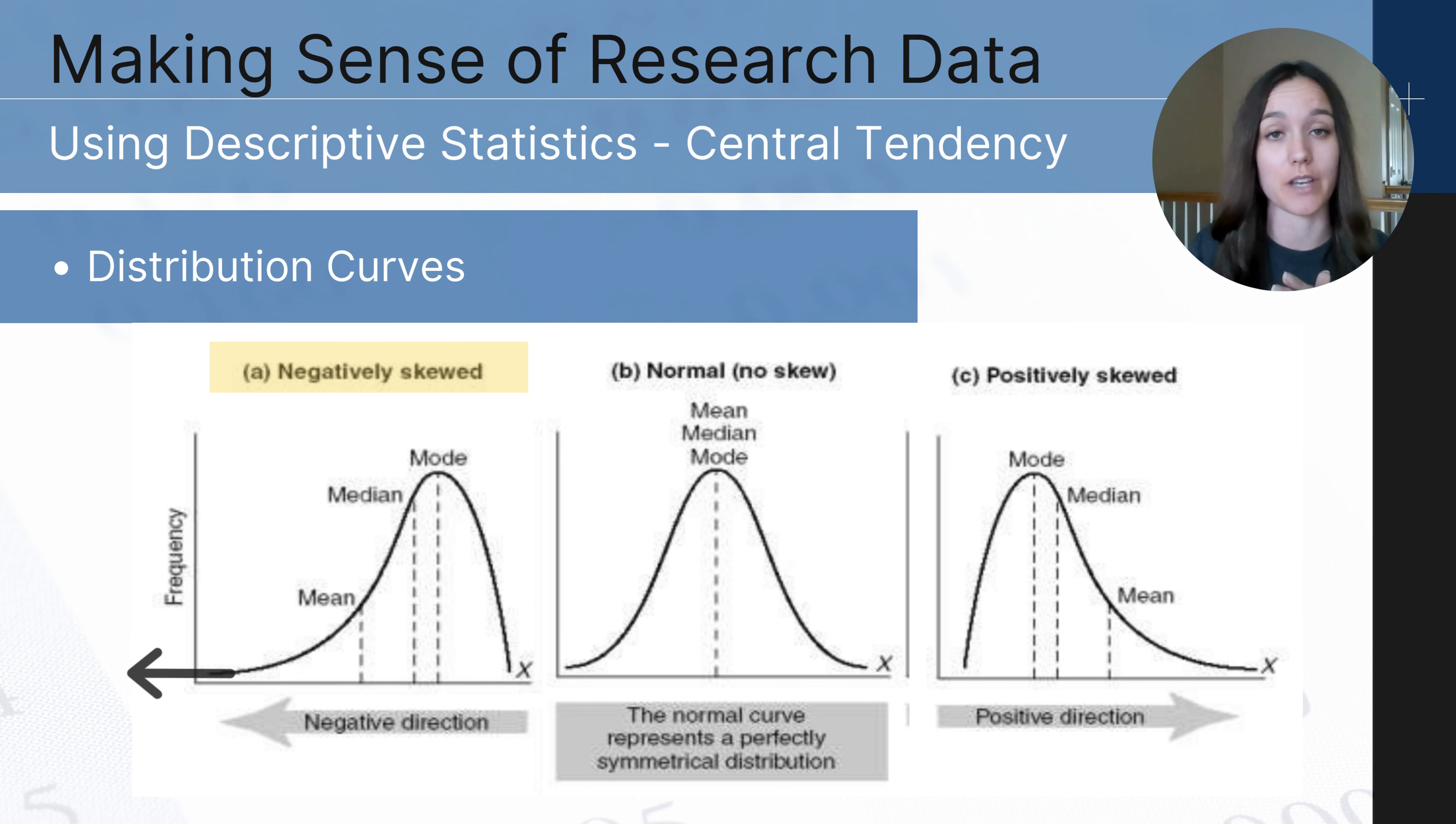Now on the right we have a positive skew and this represents when you have some outliers who have scored higher than the majority of the participants. It's actually pulling the mean higher than what most people have scored in that data set. And so this is what is referred to as a positive skew.